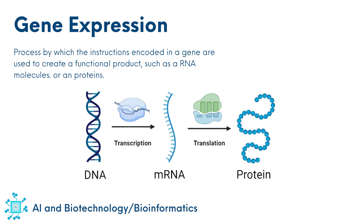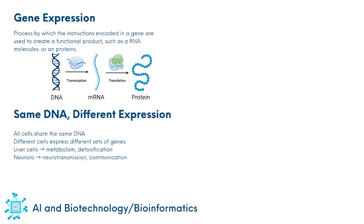Every cell in our biology contains the same DNA, but not all genes are expressed in every cell. That's why a liver cell is different from a neuron cell. The DNA sequence is the same, but the expression pattern is different from cell to cell. That's why liver cells express genes for metabolism and detoxification, while neuron cells express genes for neurotransmitters and communication.